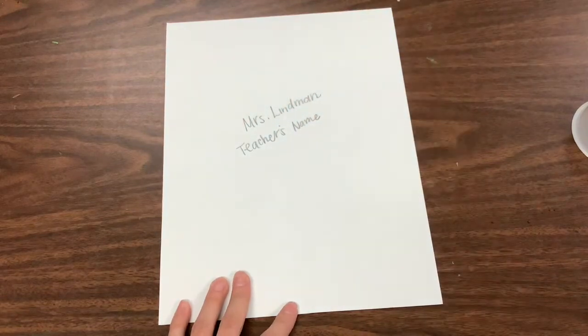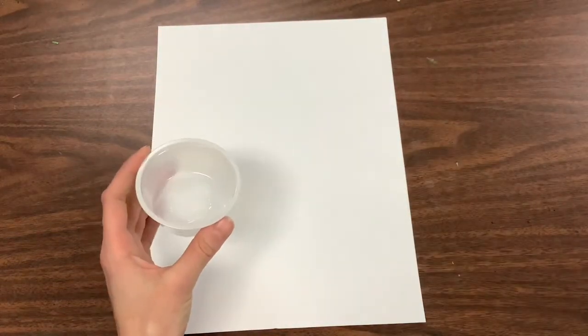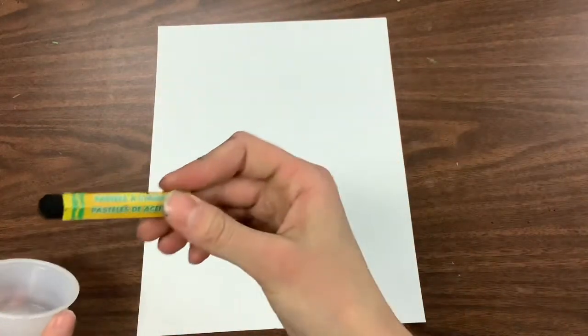Once we have our name on our paper we are going to flip it over so that our names are on the back. Then what we are going to do is take this cup at our table and a black oil pastel.